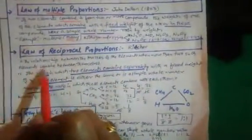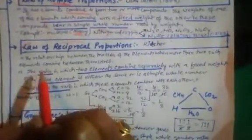The next law is the Law of Reciprocal Proportion — 'reciprocal' meaning opposite — given by Richter. This law deals with the relationship between the masses of elements when more than two elements combine. The ratio in which two elements combine separately with a third element is the same (or a simple multiple) of the ratio in which they combine with each other.